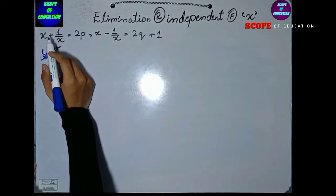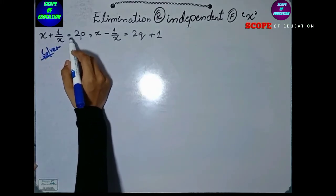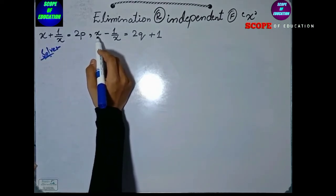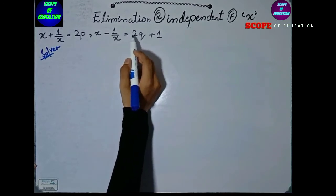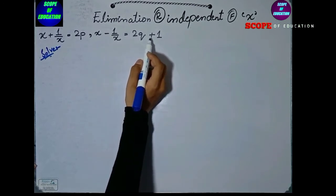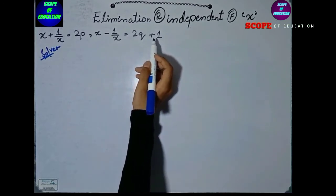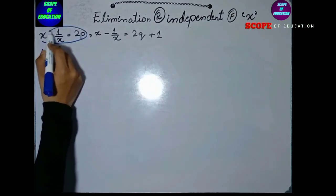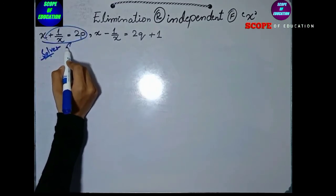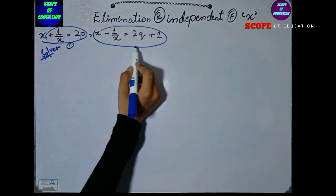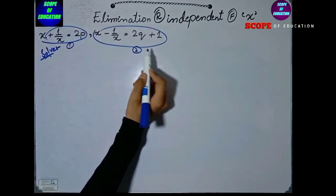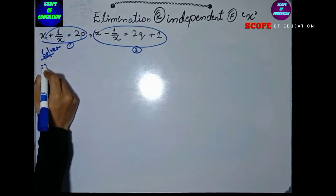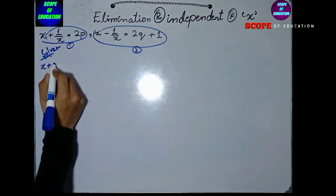Question given: x plus 1 upon x is equals to 2p, and x minus 1 upon x is equals to 2q plus 1. Let's look at our equations — here is equation one and here is equation two. Taking equation one and squaring on both sides.